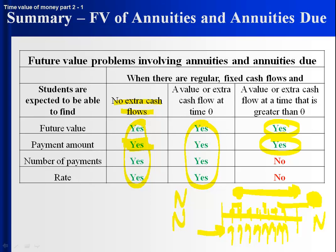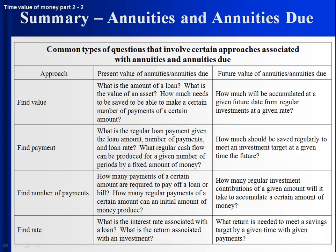Now that we've done problems with future value of annuities and annuities due, and present value of annuities and annuities due, timelines are incredibly useful to understand what's going on and what we're trying to figure out. Here's a summary table to help identify present value type questions and future value type questions.